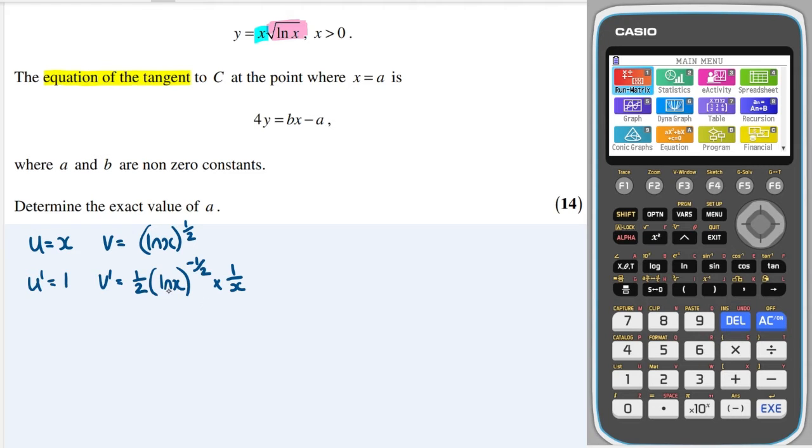So that's the shorthand way of doing the chain rule. And then my product rule will be these two multiplied together, which gives me, well, the x and the 1 over x will cancel. So I just have a half of (ln x) to the negative 1 half, plus these two multiplied together. And that will just be 1 lot of (ln x) to the half.